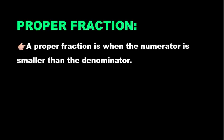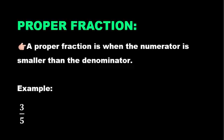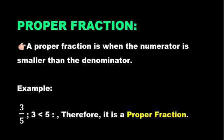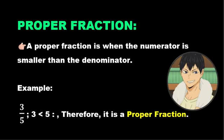First, we will discuss proper fractions. A proper fraction is when the numerator is smaller than the denominator. For example, 3 over 5 - 3 is smaller than 5, therefore it is a proper fraction. Easy, right?